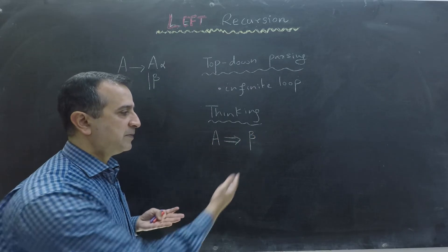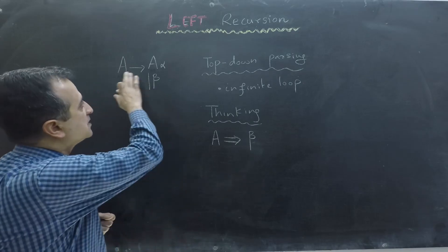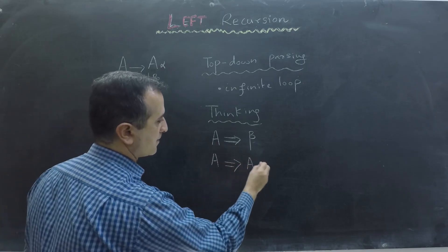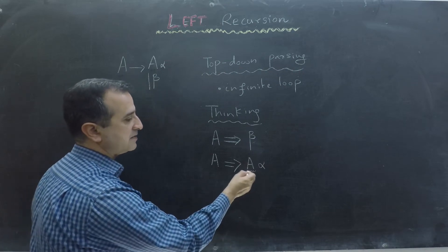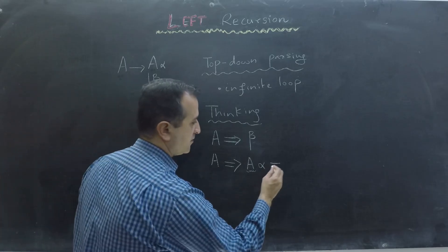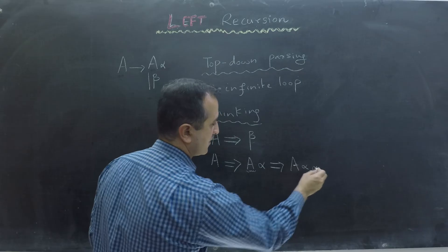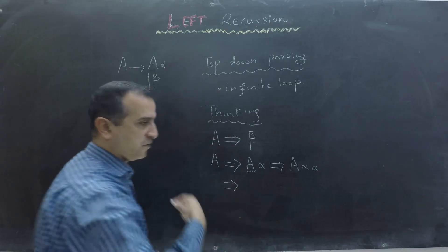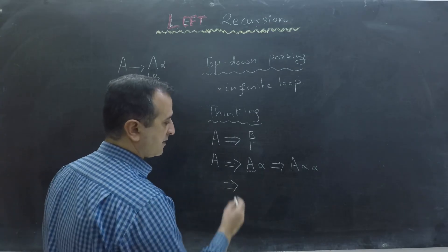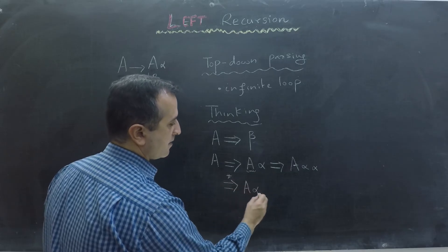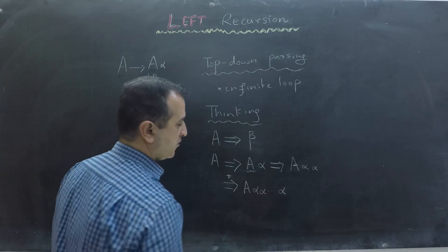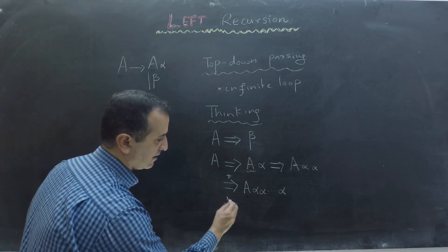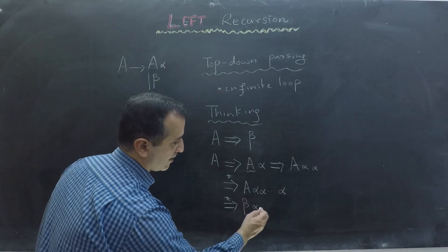From A I can derive to beta, where beta is a sequence of terminals and non-terminals. Now using the above production I can go from A to A alpha, and then I can replace this A again with A alpha, so this will become A alpha alpha. Similarly, I can continue for a long time getting the string A and many alphas. Finally I have to replace A with beta, so at the end I will get beta followed by a bunch of alphas.